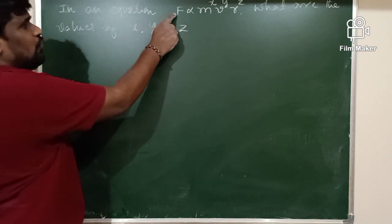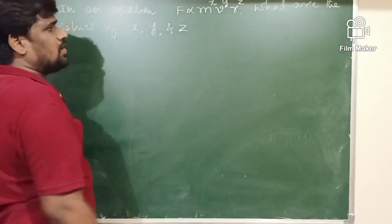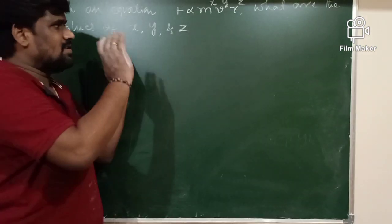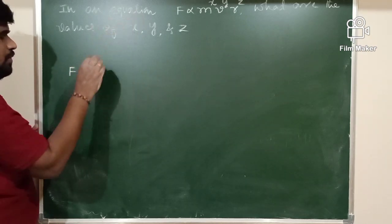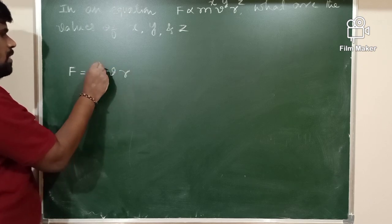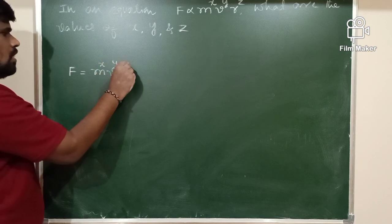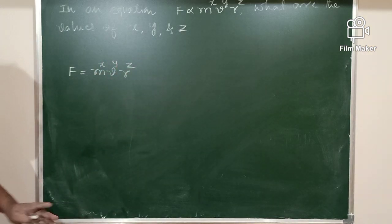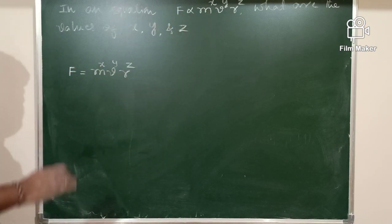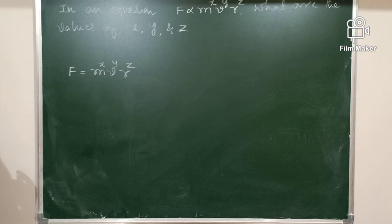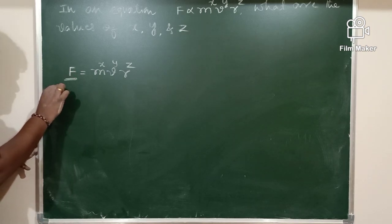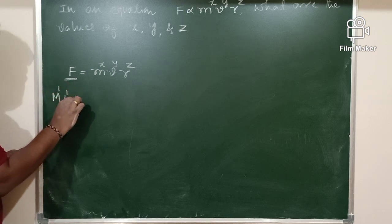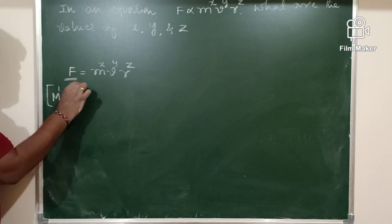Dimensionally, F should have the same dimensions as mˣ vʸ rᶻ. The dimensional formula of force is M¹L¹T⁻². Mass is M¹, velocity is M⁰L¹T⁻¹, and radius is length L¹.